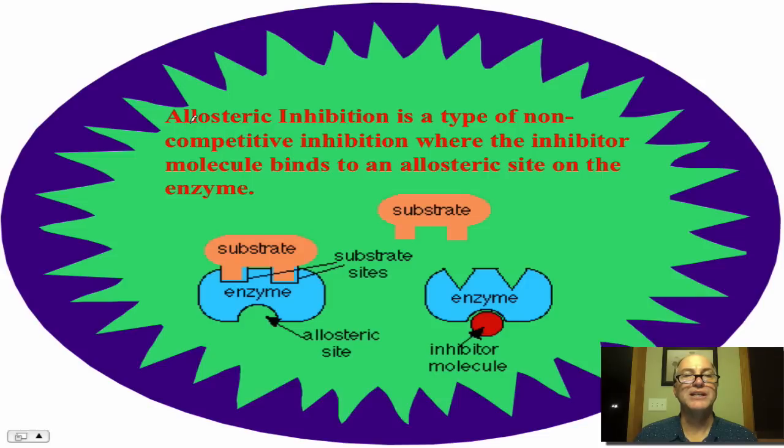Now, one type of non-competitive inhibition that's probably the most common is called allosteric inhibition. Allosteric inhibition is a type of inhibition where the inhibitor molecule binds to a location that's not the active site, but it's a specific location called the allosteric site. So there's the active site of the enzyme. There's the allosteric site. Not every enzyme has this, but many do. Let's say this red molecule is the inhibitor. You can just see it binding and changing shape of the active site, which is non-competitive inhibition.